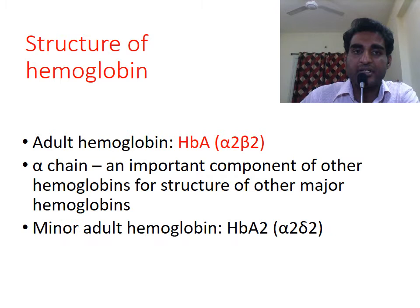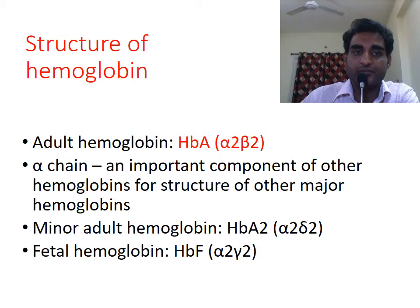If instead of the beta chain, the hemoglobin contains a delta chain, it is called HbA2, and if the chain is gamma, it is referred to as HbF.